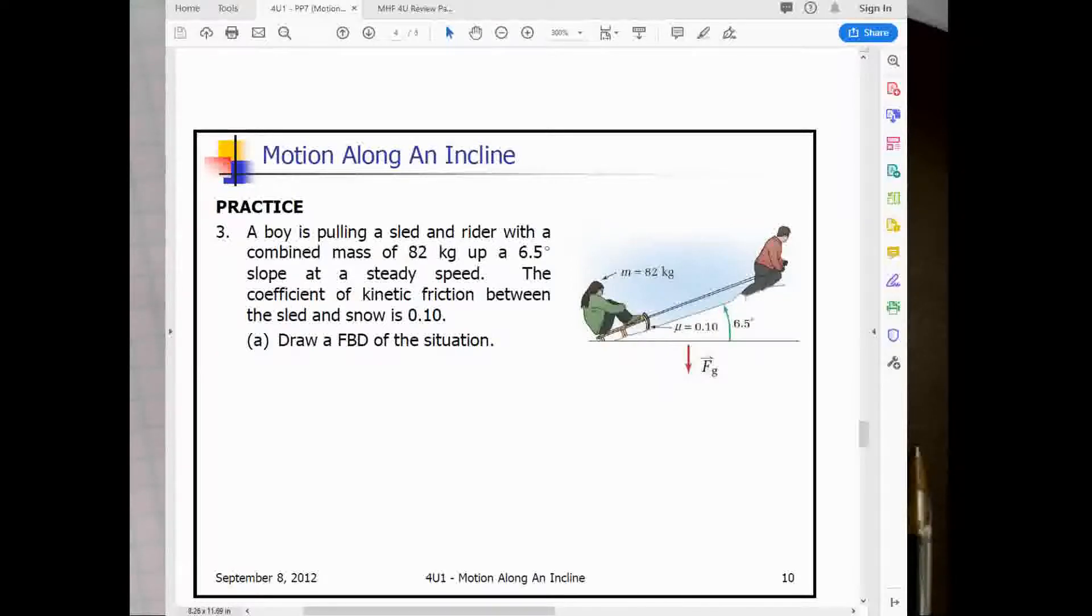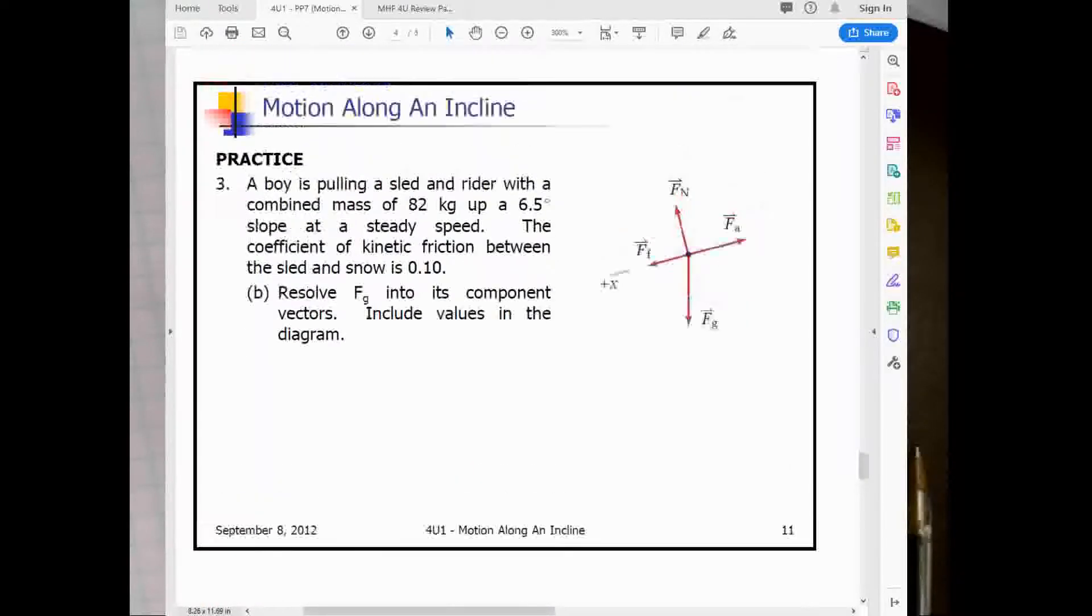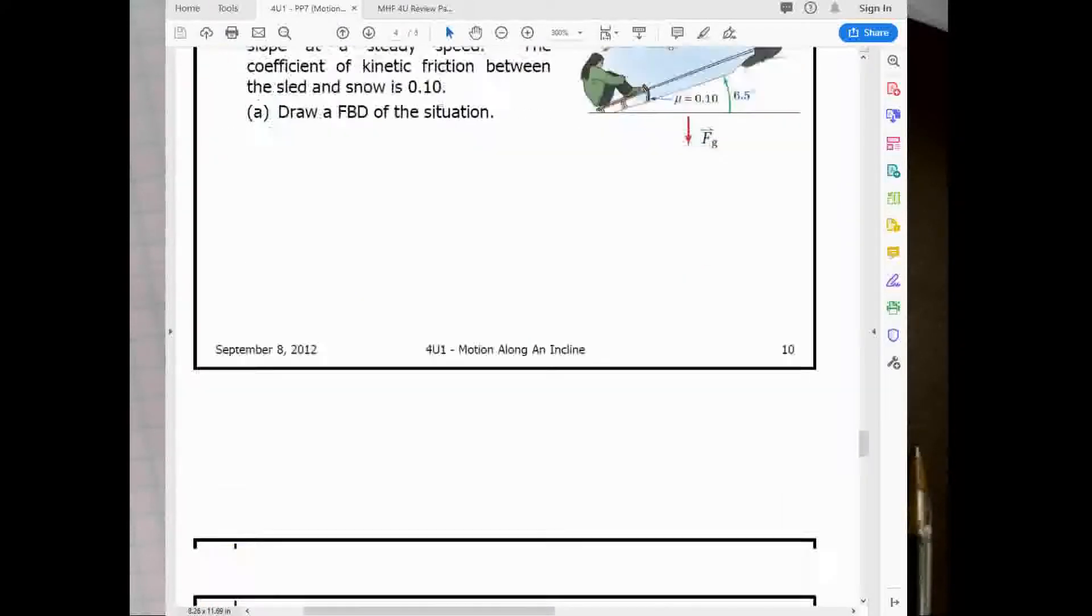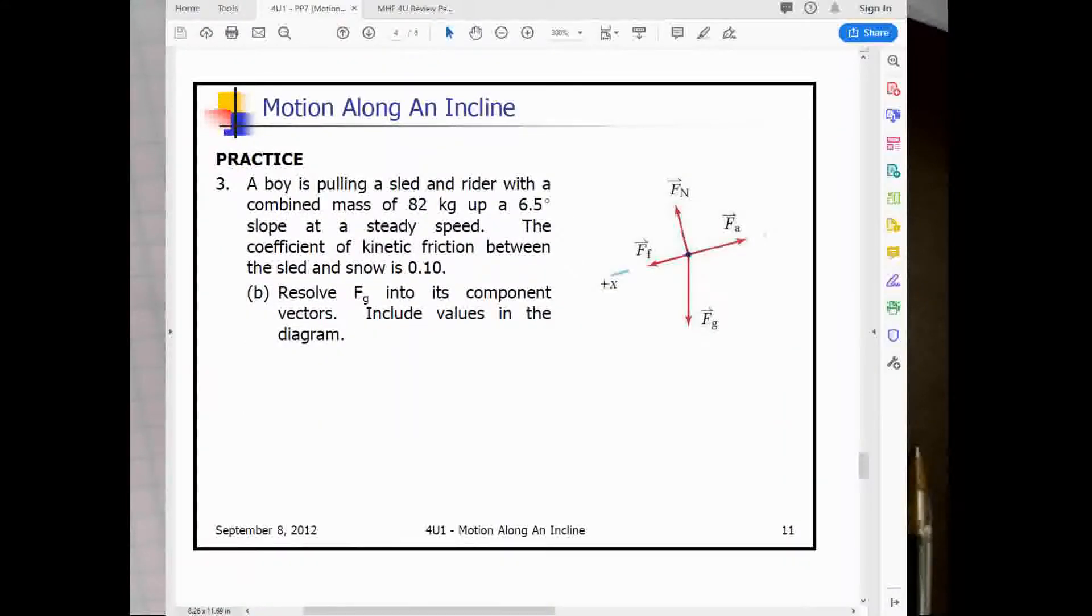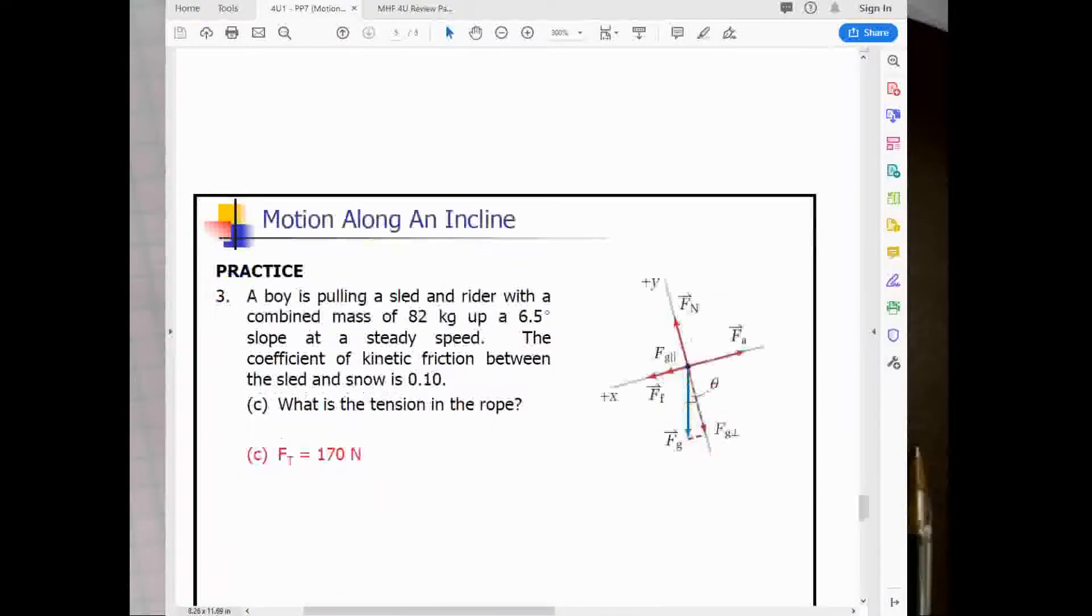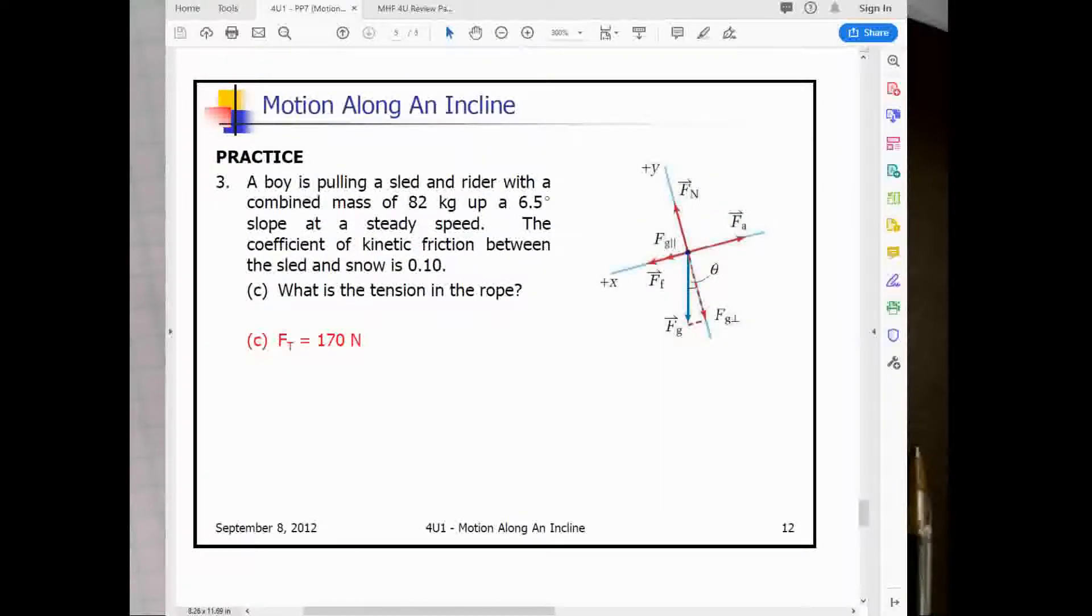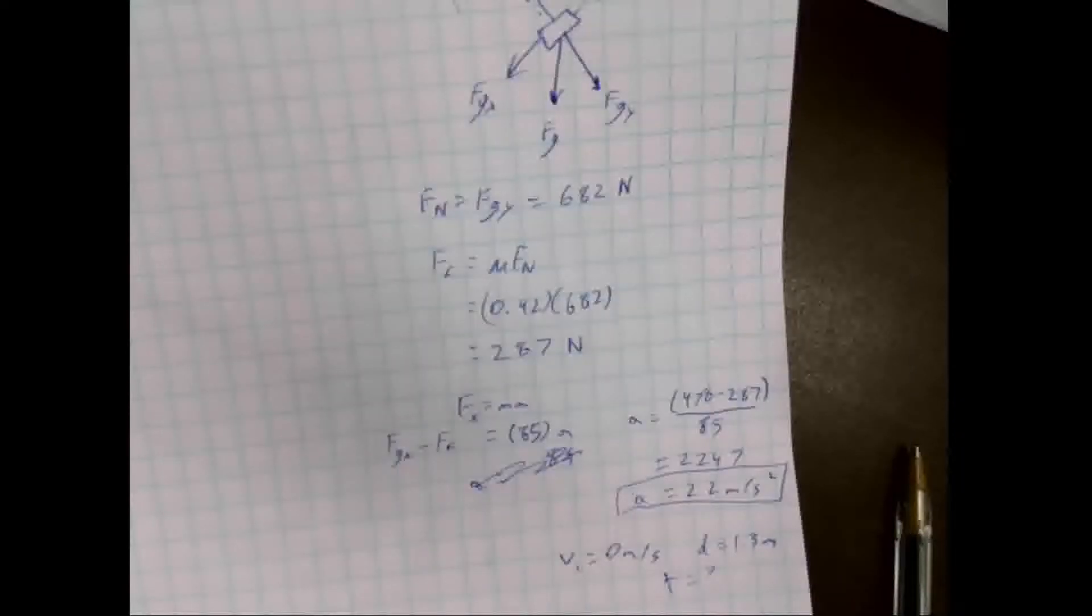Let me switch back to the computer screen here. And for this next problem, it says there's a boy pulling on a sled with a rider. The combined mass of them is 82 kilograms, and they're going up an angle of 6.5 degrees at a steady speed. So the coefficient of kinetic friction between the sled and the snow is 0.1. And we're asked to find the free body diagram, and then we have to resolve FG into its components. And then lastly, we have to find the tension in the rope. So I'm going to do all of that with you and show you how that calculation works out.